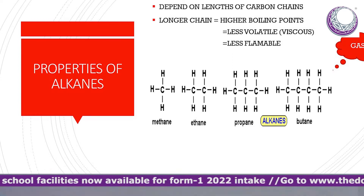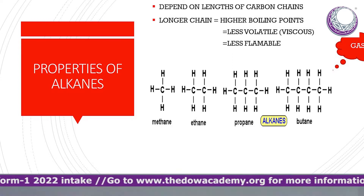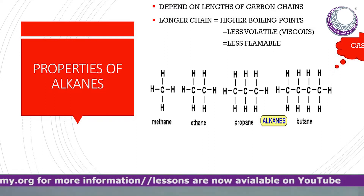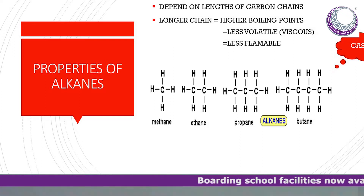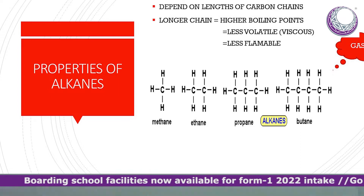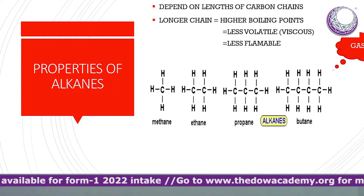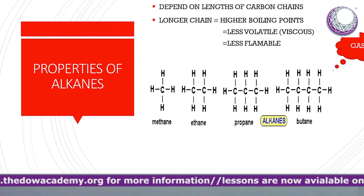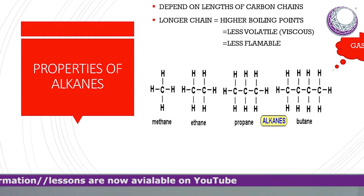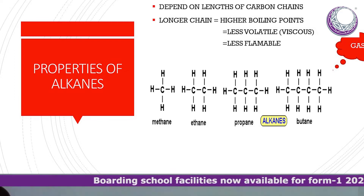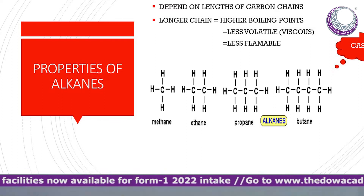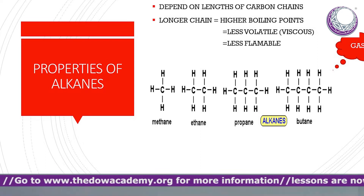The properties of alkanes depend on the length of the carbon chains. The longer the chain, the higher the boiling point; the longer the chain, the less volatile it is; and the longer the chain, the less flammable it is. So a shorter carbon chain means more volatile, and a longer carbon chain means less volatile and less flammable.